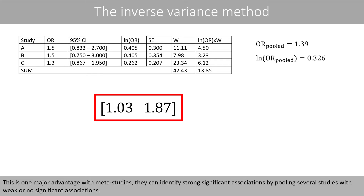This is one major advantage of meta-studies: they can identify strong, significant associations by pooling several studies that individually show weak or no significant associations.